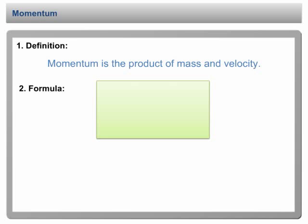Second, you need to know the formula of momentum. The formula of momentum is p equals to mv, where p is momentum, m is mass, and v is velocity.